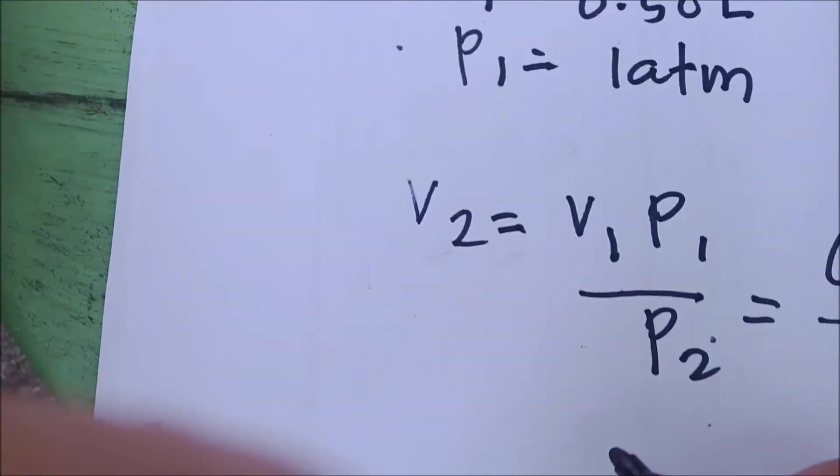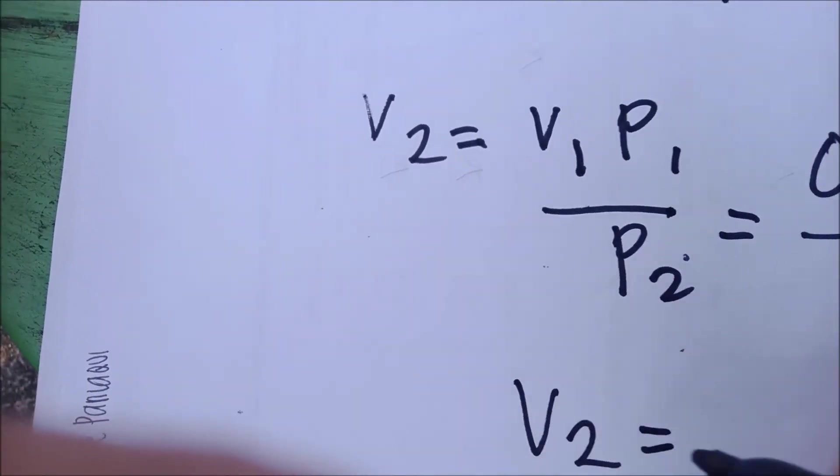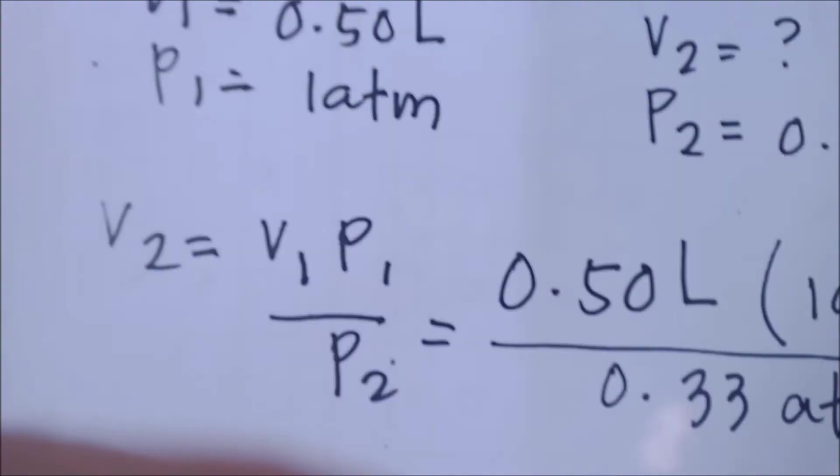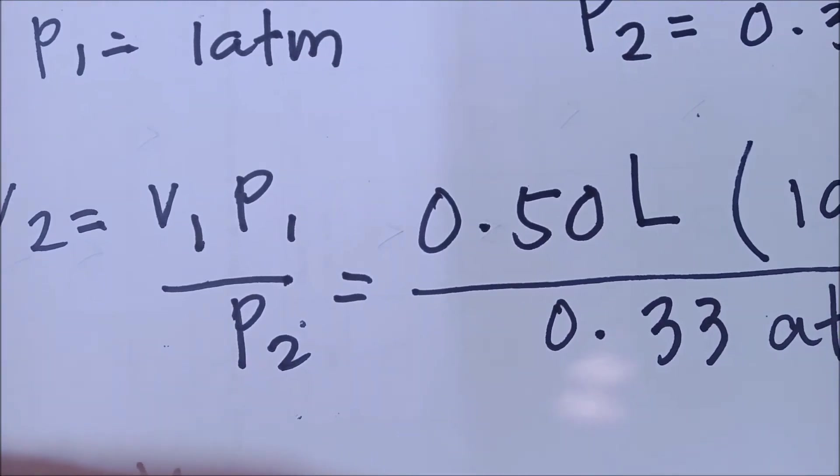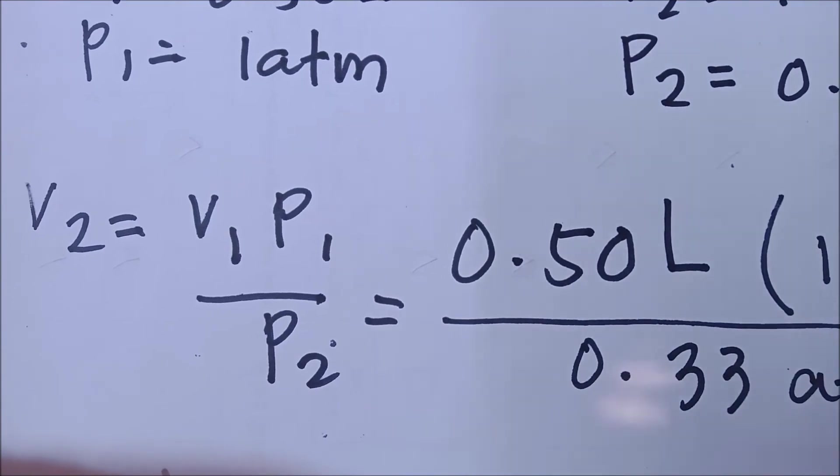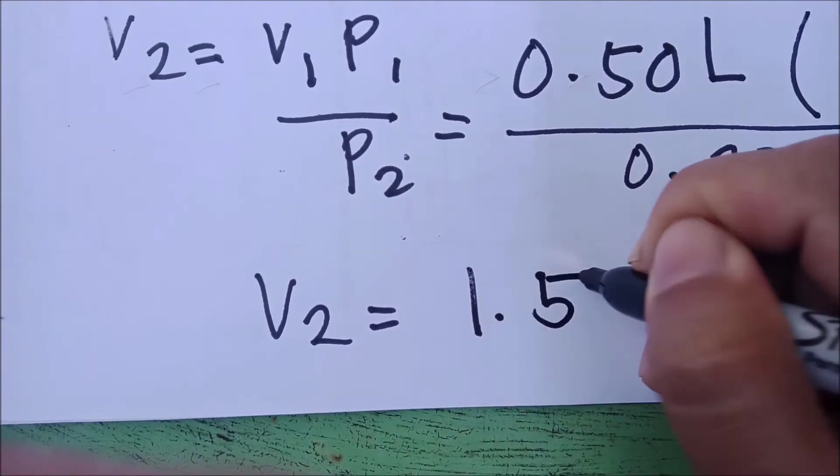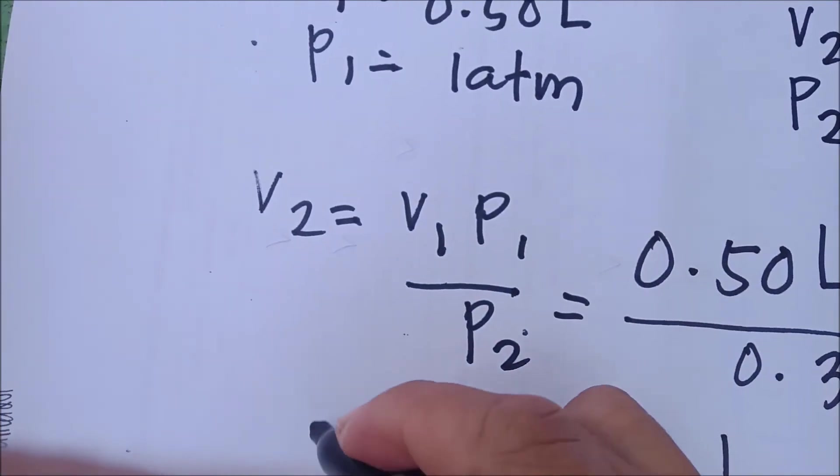Hence, that will also be our unit for our final volume, or V2. 0.50 times 1 is 0.50 divided by 0.33. Our final answer, after calculating it down, you have 1.5 liter.